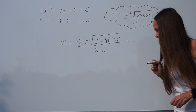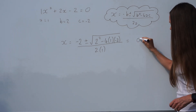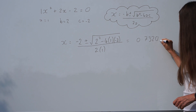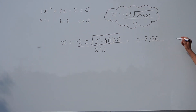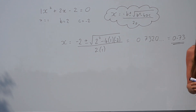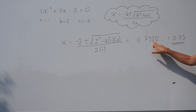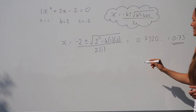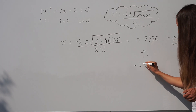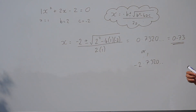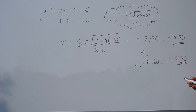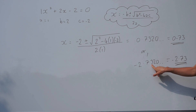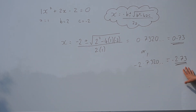If you put it in the calculator with the plus, you should get 0.7320 and so on. Rounded to two decimal places — which is what's usually expected in this type of question — it would be 0.73. The third digit is a 2, so it doesn't round the 3 up. Then if you put it into the calculator again with the negative sign, you should get negative 2.7320 and so on, which rounds to negative 2.73. So we've solved the equation.